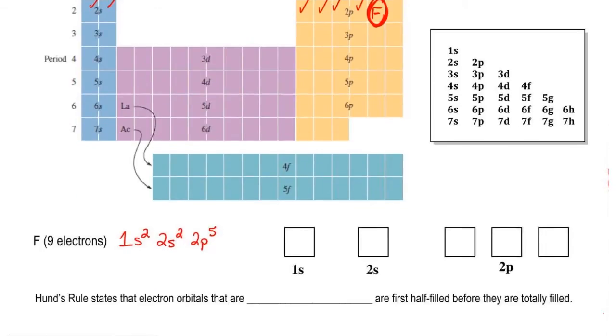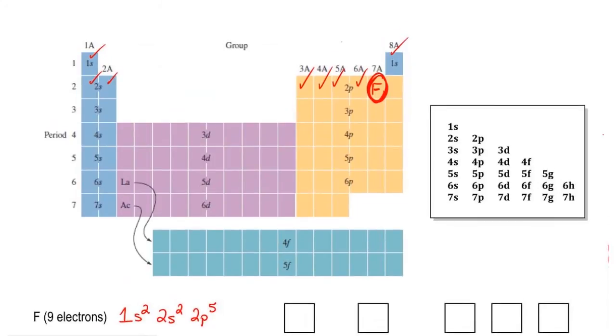Now there's another type of way we could have solved for the electron configuration of fluorine. It's an older way, but it still works too. It's called using the Aufbau diagram, which is this little image right here. And we're going to say here the way the Aufbau diagram works is like this. So we're going to fill this out in this way.